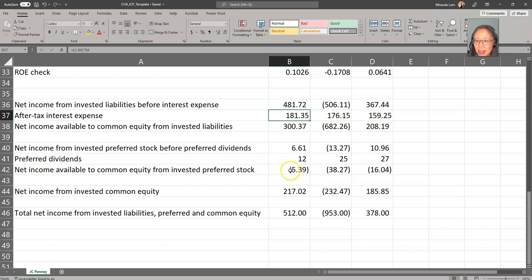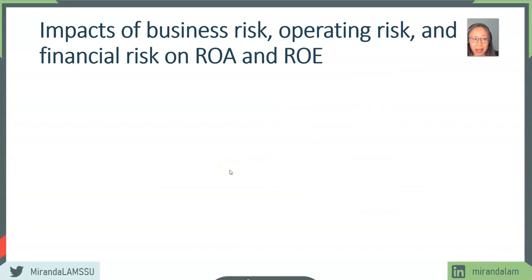For common stock, it's actually a negative contribution. For liabilities, as long as the company is making money, it is contributing. By computing these ratios, we can understand the impact of different kinds of risk — whether the risk comes from business and operating characteristics, or from the financial risk taken on by using liabilities in the capital structure.